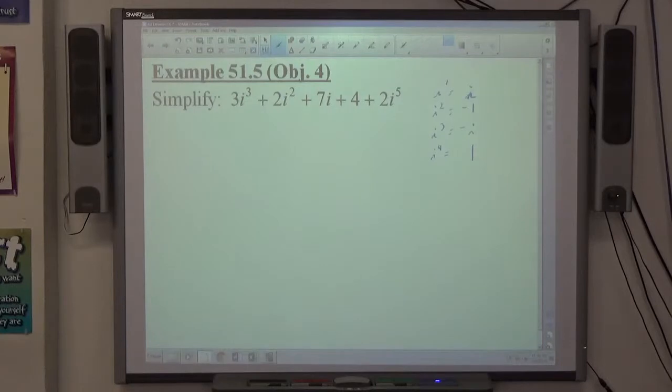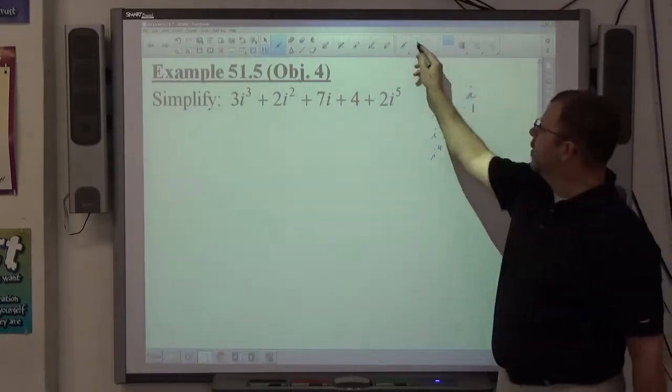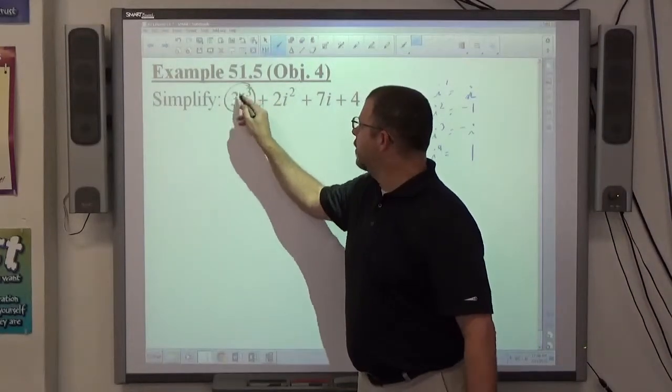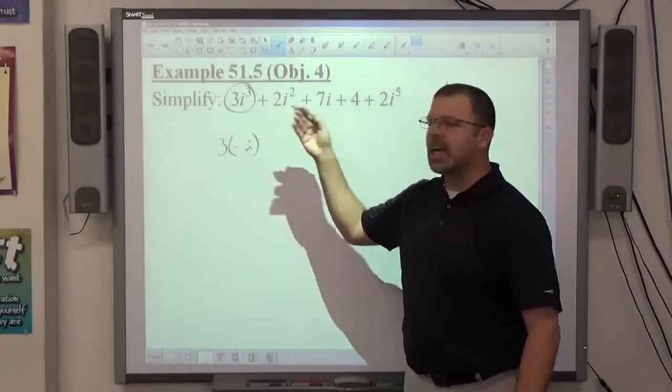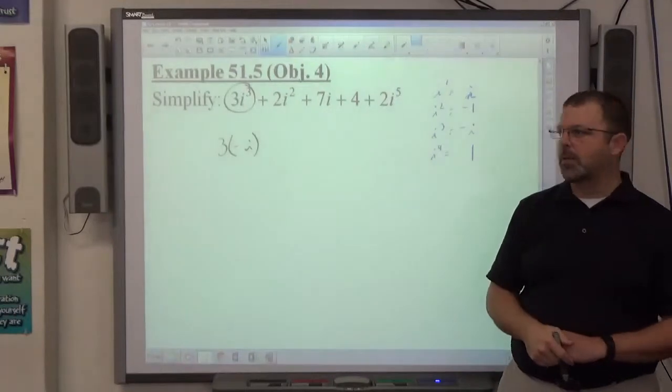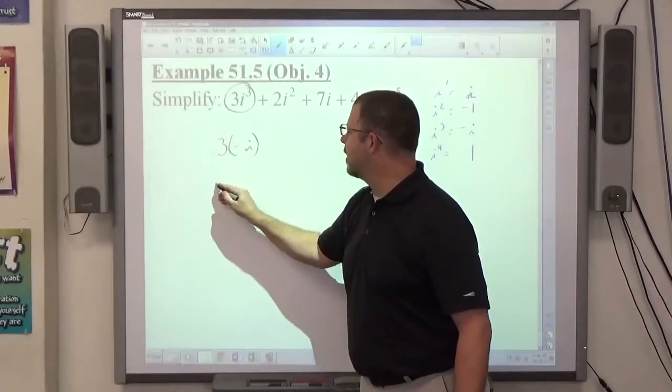Alright, so once I see that, I look at each individual piece. 3i³ is going to be 3 times -i. Again, -i is better than i cubed because it's to the first power, and 3 times -i is -3i.